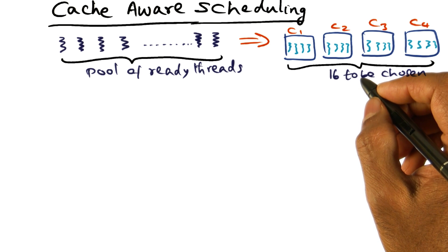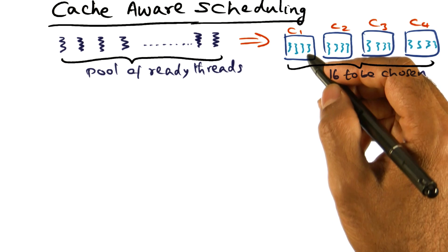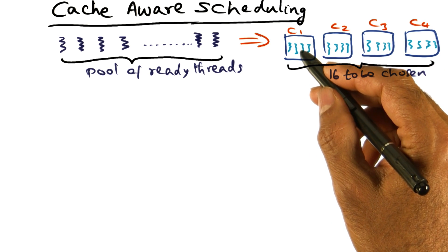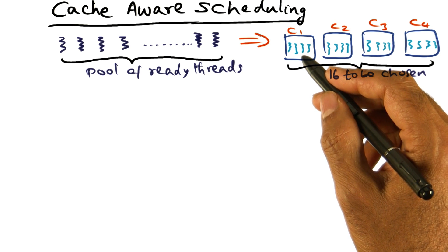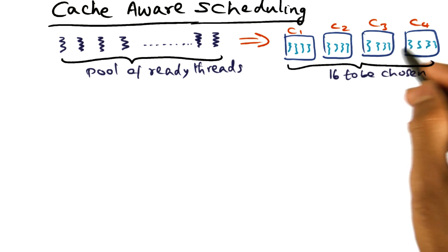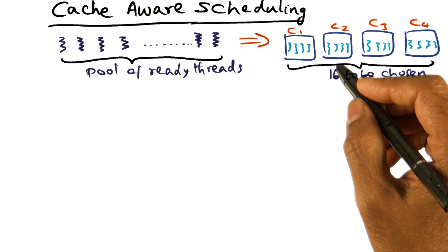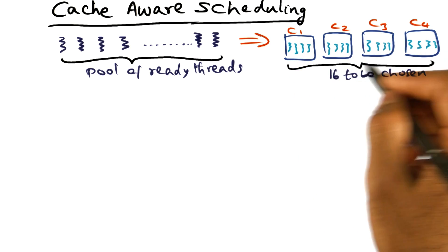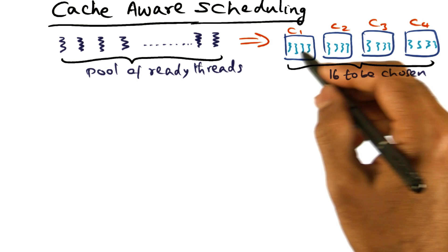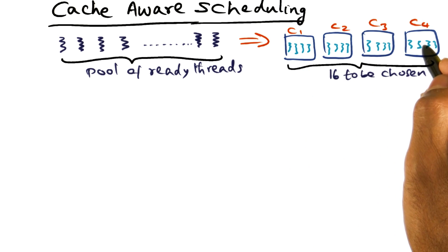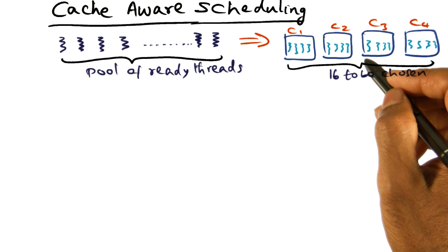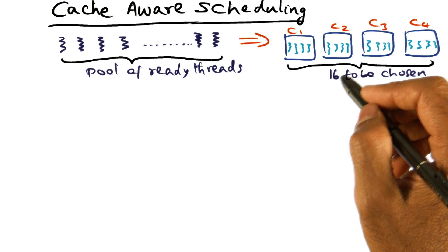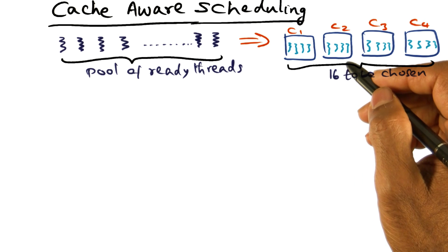What the operating system should try to do is it should co-schedule some number of cache-frugal threads and some number of cache-hungry threads on the different cores, so that together, the sum of all the cache hungriness of the 16 threads that are executing at any point of time in the CPU is less than the total size of the L2 cache. As I said, L2 cache, in this simple example, I gave you two levels of caching.